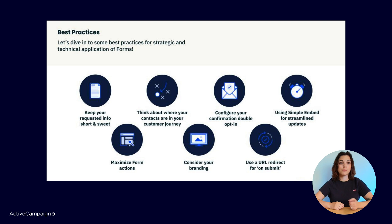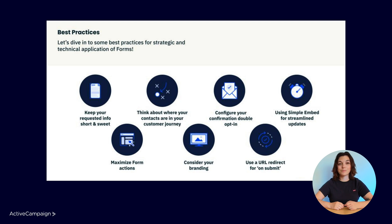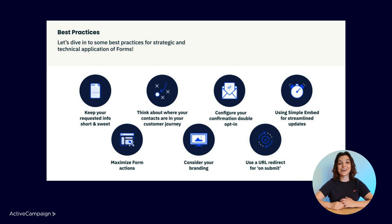It's important to leverage forms throughout the customer journey. Keeping in mind where contacts are in the customer journey when they find and fill out that form will help you determine what information you need to ask for. If you use your forms to subscribe contacts to your list, it's a best practice to configure double opt-in. Double opt-in means that after your contacts submit your form, they'll receive a confirmation email asking them to confirm their subscription to your list. This ensures contacts are intentionally subscribing and that the information they provide is accurate.